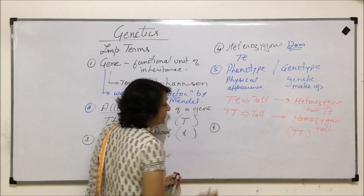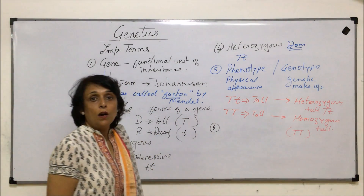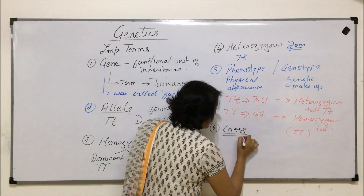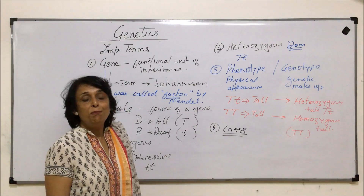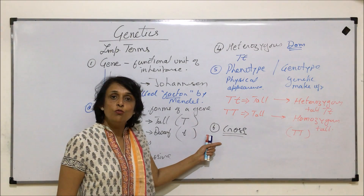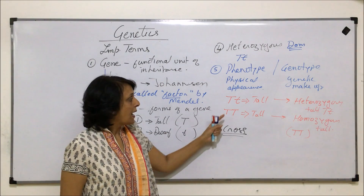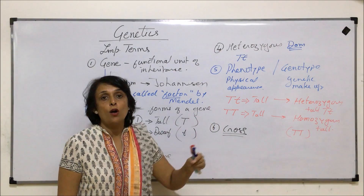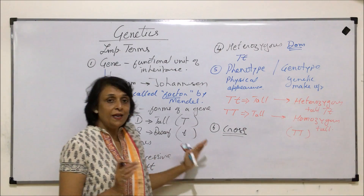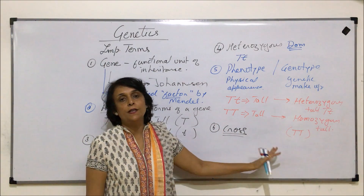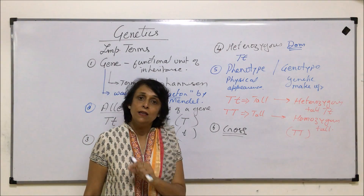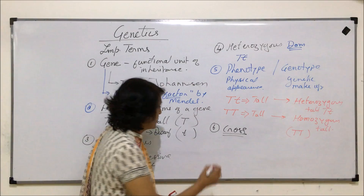The next term is cross. Cross is actually breeding two plants or reproducing two plants. When we say a tall plant is crossed with a short plant, that means we are talking about breeding or reproduction between a tall plant and a short plant. This is a cross.